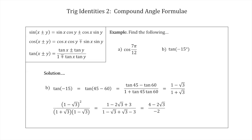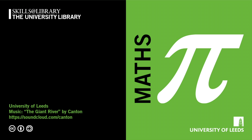Dividing both numerator and denominator by −2, we cancel the −2, and we end up with −2 + √3. So the final answer for Example B is √3 − 2. Each step used our exact triangle values for tan(45°) and tan(60°). Thanks for watching and see you next time.